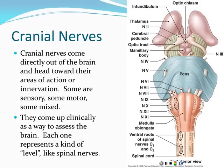That covers the cerebrum. We toured the brain last time and talked about the cerebrum today. We're now moving to the next topic in this chapter: cranial nerves.